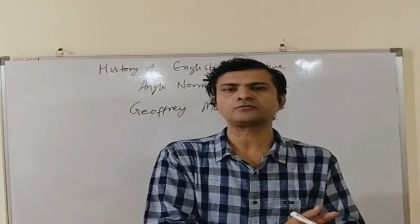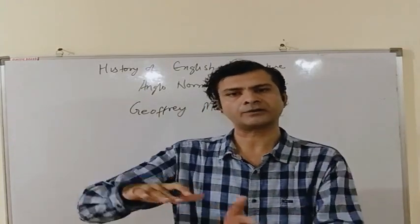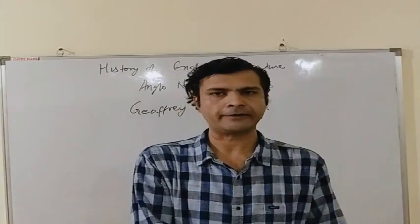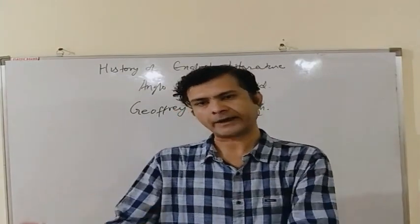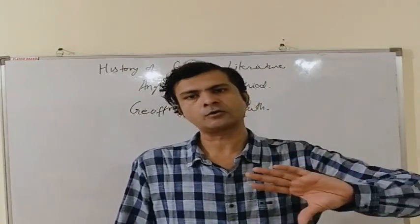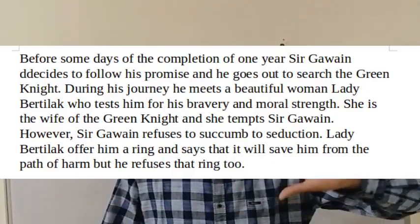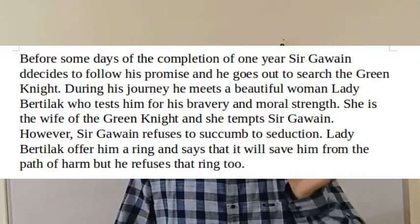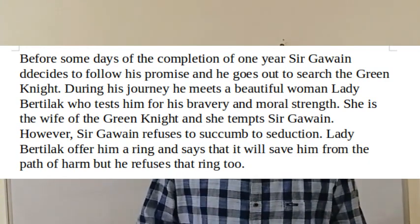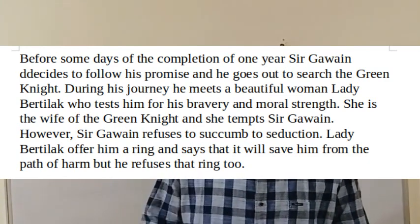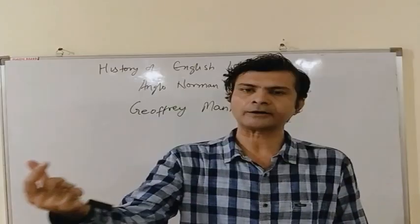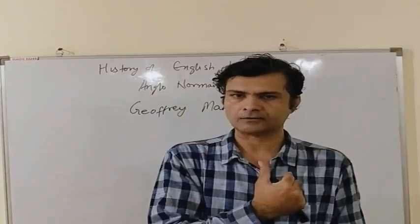Before going out of the court, the Green Knight said that Sir Gawain must search him after one year to take the return strike. So it was confirmed that after one year, the Green Knight would strike Sir Gawain's neck and behead him — meaning he would die. Sir Gawain was now a person who knew that after one year he was going to die. He remained very worried. Just some days before the completion of one year, he went out to fulfill his promise and search for the Green Knight.